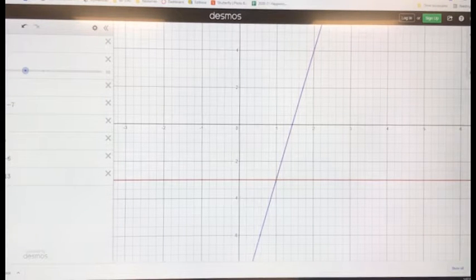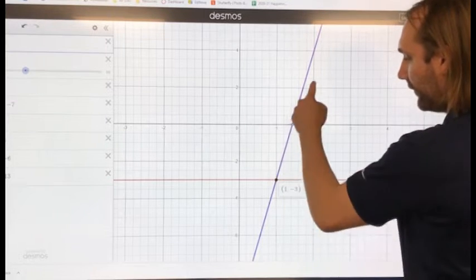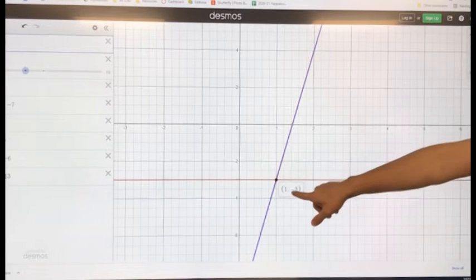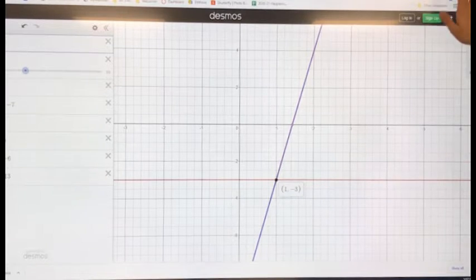Intersection. The intersection point, right? Where those two lines meet. And they meet at, hey, what do you know? 1 and negative 3. Exactly what I found.